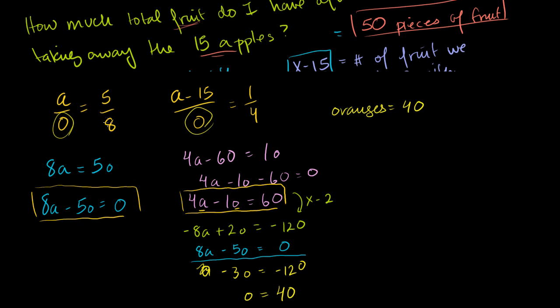So what are our apples equal to? We could go to either of these equations. We have 8 times our number of apples equals 5 times the number of oranges, or 5 times 40. 8 times the number of apples equals 200. Or the apples equals 200 over 8, which equals 100 over 4, which equals 25.